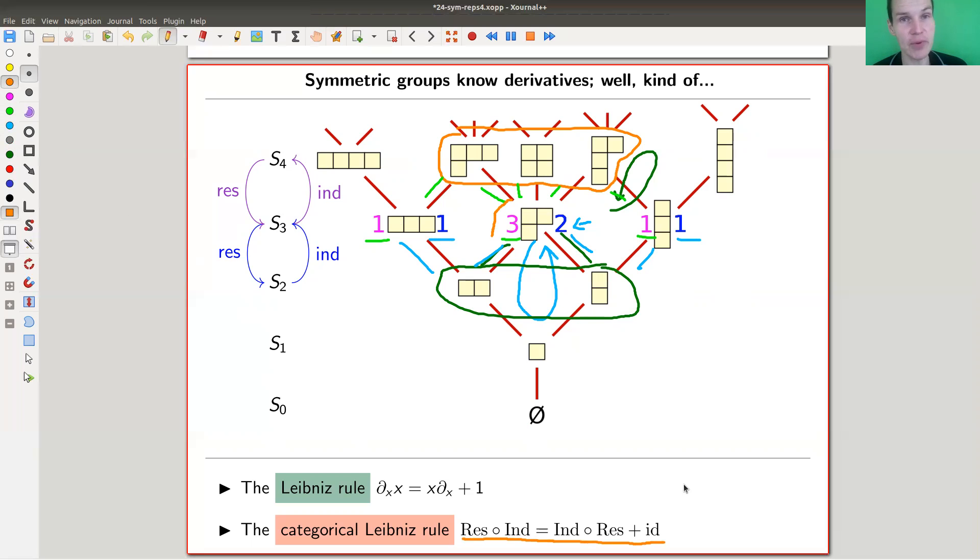This is a relation that is satisfied: if you induce and restrict, that's the same as restricting and inducing, but you're off one, so you just have plus identity. This holds as functors, actually—there would be an isomorphism here. This categorifies the Leibniz rule, if you want, so the product rule for the derivative: take the derivative and multiply by x compared to multiply by x and take the derivative, which are almost the same, but you're just short one element.